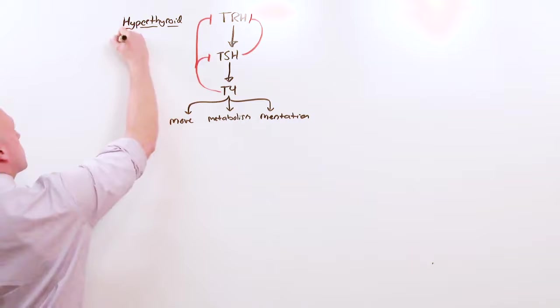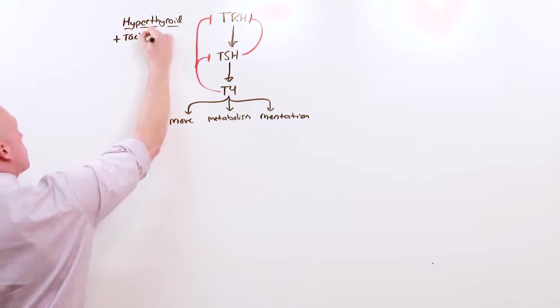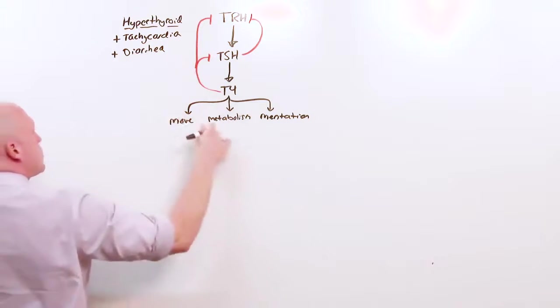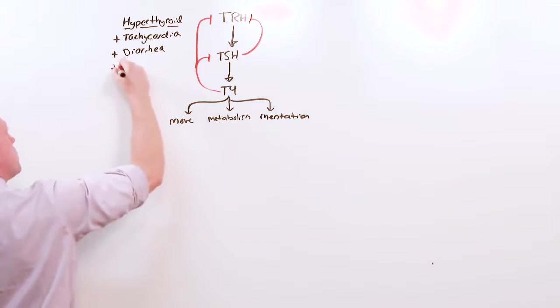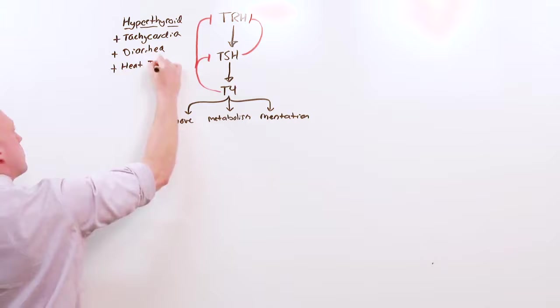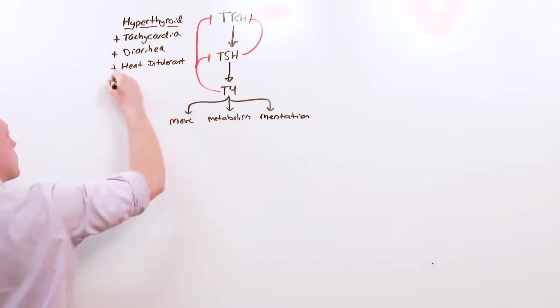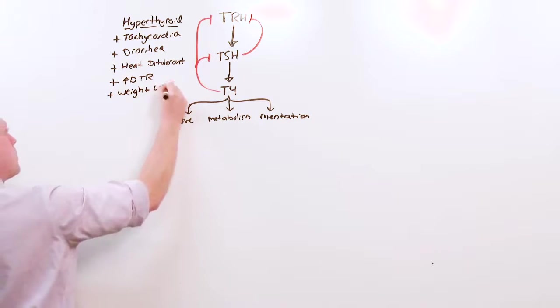symptoms of hyperthyroidism include tachycardia, your heart moving too fast. If your bowels move too fast, you get diarrhea. If your metabolism is ramped up, you'll be heat intolerant, hot when everyone else is cold. Increased deep tendon reflexes. With all this diarrhea and burning energy, you'll see weight loss. And in hyperthyroidism, you might see AFib.